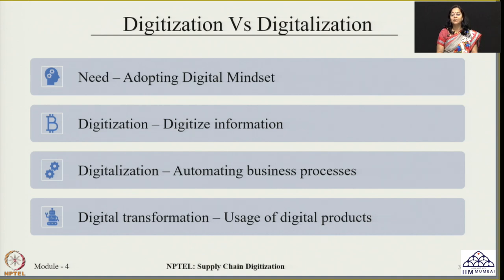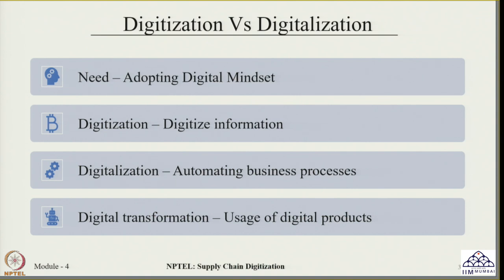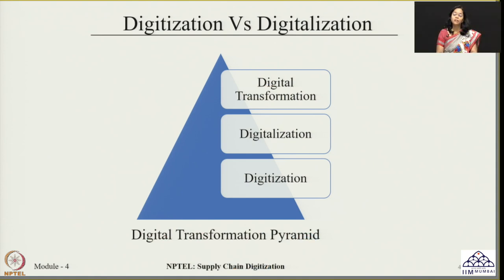The next step is digitalization, where the data that has been captured is subsequently used and here we try to automate all the business processes which are attached to it. Digitalization focuses more on bringing up automation, and the processes get automatically handled — the data being generated, shared and accordingly decisions being taken up. The last stage is digital transformation, where we introduce digital products into these processes and we try to see that the objective is subsequently achieved.